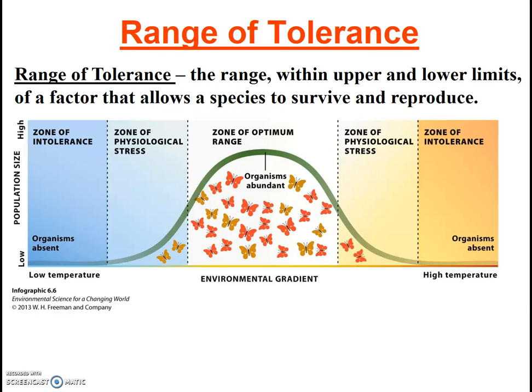Populations have a range of tolerance for all sorts of different factors — for example, temperature, oxygen levels, nutrient levels, etc. — which could all be on the x-axis as an environmental gradient. There is generally an optimal range for each particular factor. Outside of this range, there may be individuals within the population who are able to survive, but they may be stressed and thus not grow as well or not be able to reproduce as well.